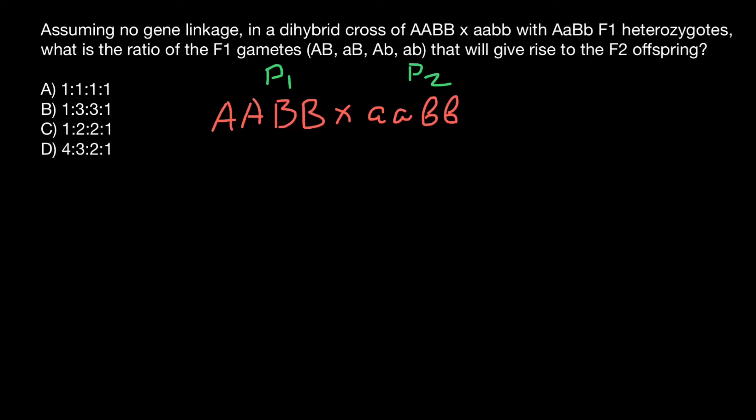The next generation is going to be F1 generation. The genotype of F1 generation is going to be uniform, and it's going to be capital A small a and capital B small b. We have to cross with itself to get the next generation, which we call F2 generation.